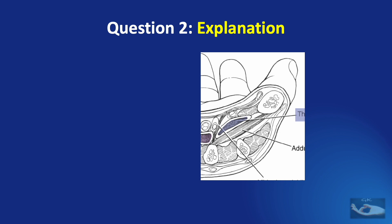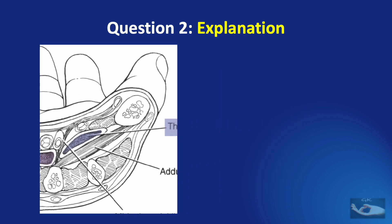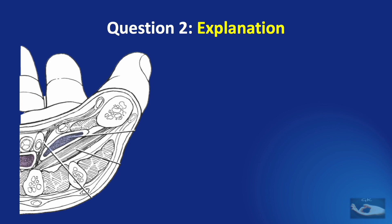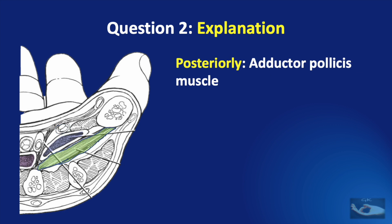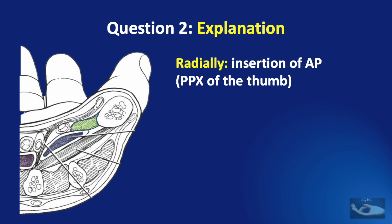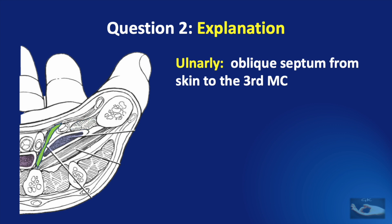We shall now see a cross-sectional anatomy of the palm to understand the boundaries of the thenar space. Anteriorly, we have the tendons of the flexor pollicis longus, the flexor digitorum superficialis and profundus of the index finger, and the first lumbrical muscle. Posteriorly, it is bounded by the adductor pollicis muscle. On the radial side, the thenar space is limited by the insertion of the adductor pollicis into the proximal phalanx of the thumb, and on the ulnar side is the oblique septum from the skin to the third metacarpal.